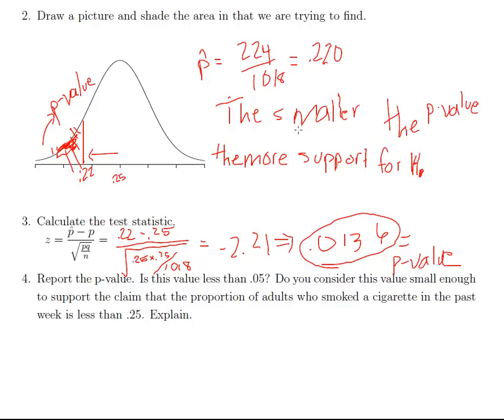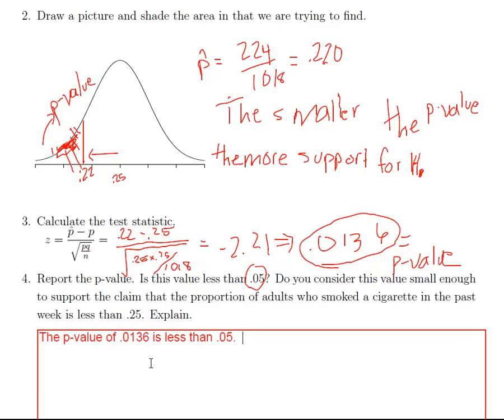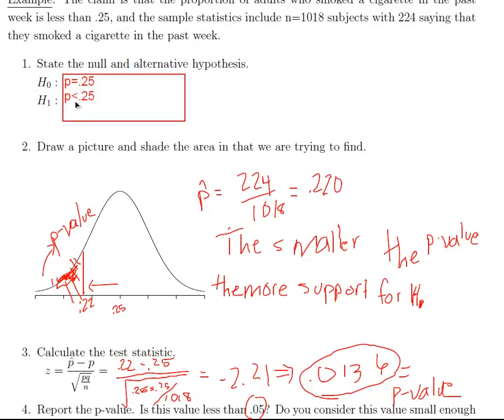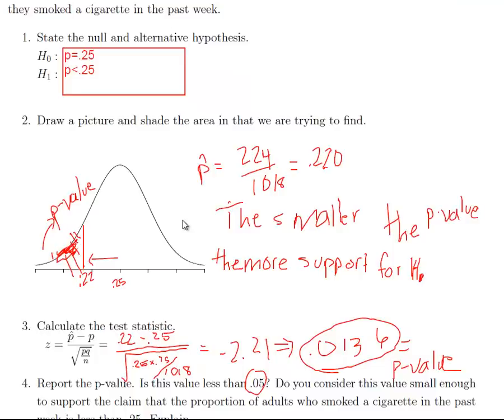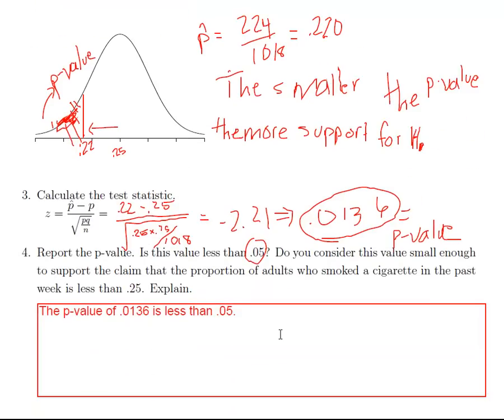Okay, and remember we said the smaller the p-value, the more support for H1. Well, a lot of times 0.05 is used as a cutoff. And our p-value is less than 0.05. And so I can make my conclusion based on that. So the p-value of 0.0136 is less than 0.05. Remember, we're trying to show the alternative hypothesis. If your p-value is small, then we have support for the alternative hypothesis. The alternative hypothesis is stating that p is less than 0.25. Since our p-value is small, we are able to conclude that the proportion of smokers is less than 0.25.